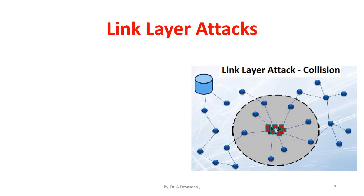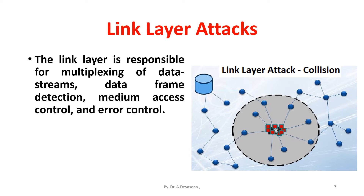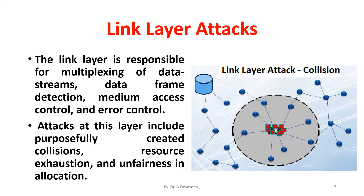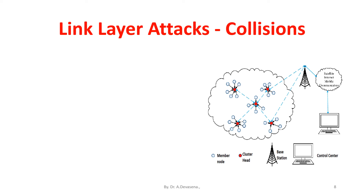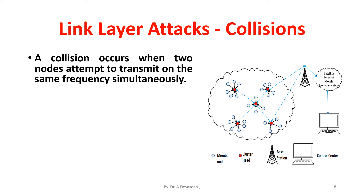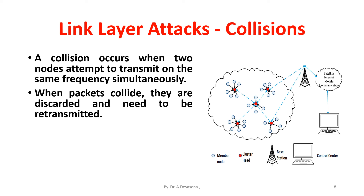Link layer attacks. The link layer is responsible for multiplexing of data streams, data frame detection, medium access control, and error control. Attacks at this layer include purposefully created collisions, resource exhaustion, and unfairness in allocation. A collision occurs when two nodes attempt to transmit on the same frequency simultaneously. When packets collide, they are discarded and need to be retransmitted. An adversary may strategically cause collisions in specific packets such as acknowledgement control messages.